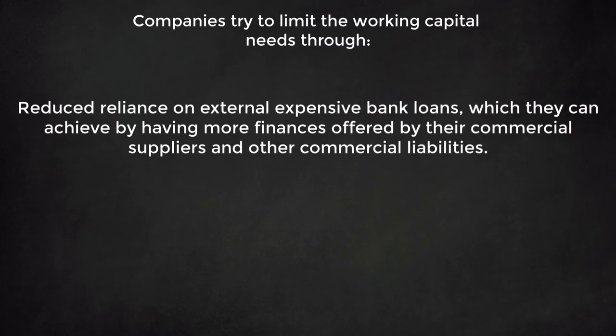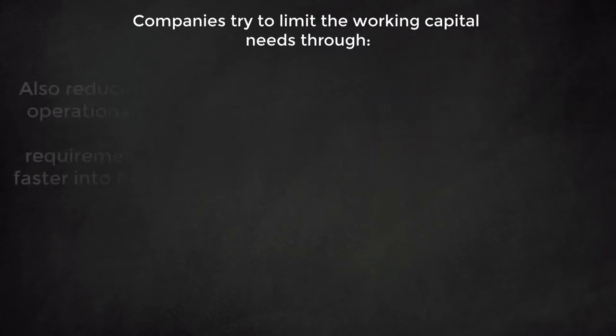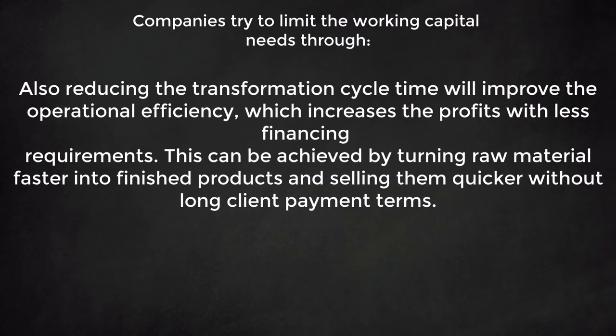Companies try to limit the working capital needs through reduced reliance on external expensive bank loans, which they can achieve by having more finances offered by their commercial suppliers and other commercial liabilities. Also, reducing the transformation cycle time will improve the operational efficiency, which increases the profits with less financing requirements. This can be achieved by turning raw material faster into finished products and selling them quicker without long client payment terms.